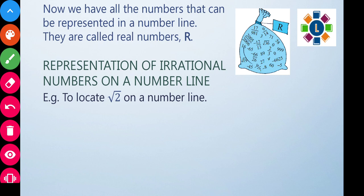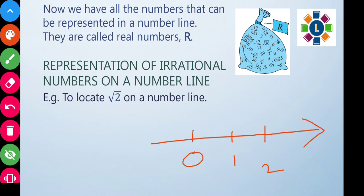Next, we will represent irrational numbers on the number line. First, let us represent root 2 on the number line. We draw the number line with zero, one, two, and mark unit lengths. Then we draw a perpendicular of one unit at the point one on the number line.